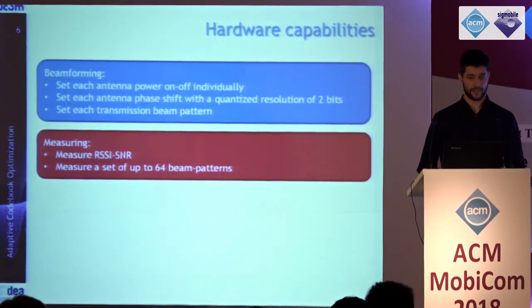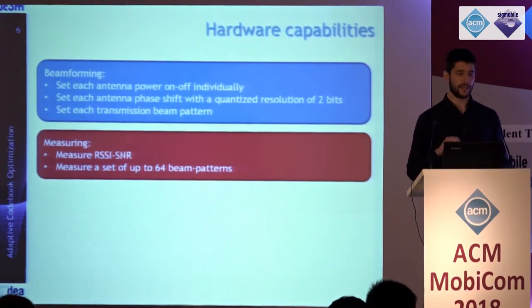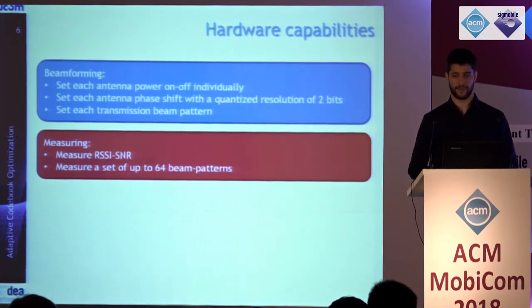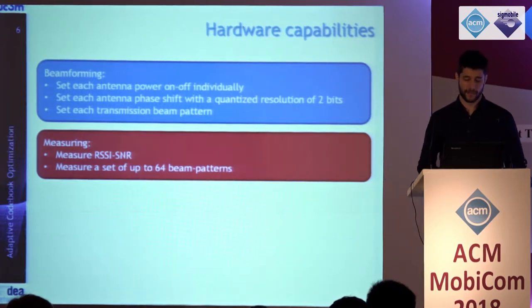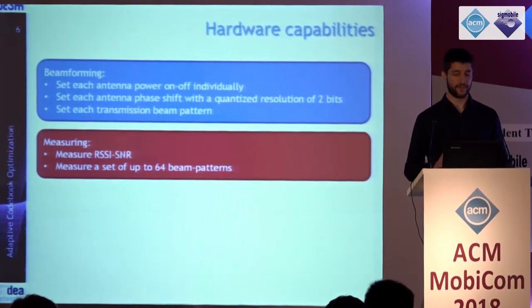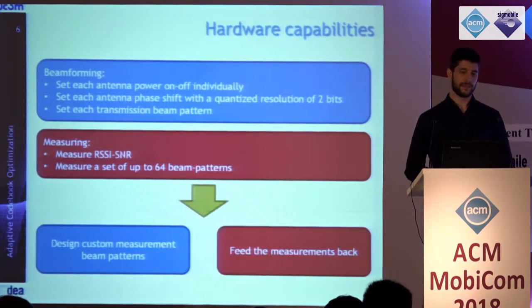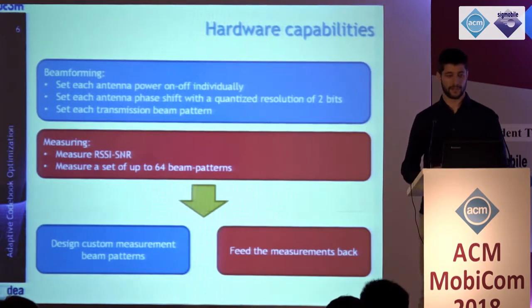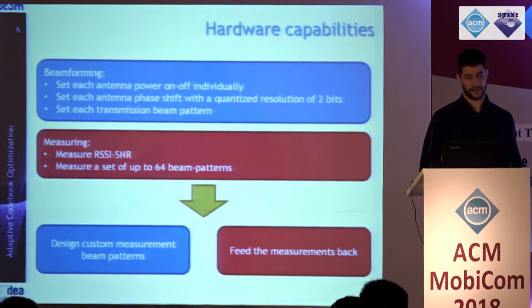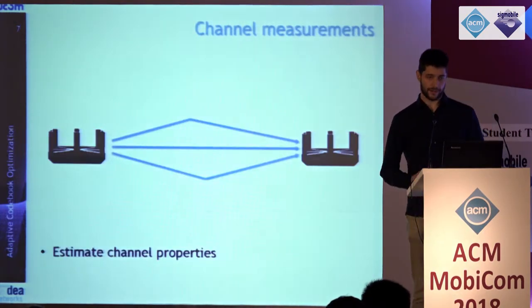This is why the standard currently uses a brute-force algorithm that simply checks different beam patterns, compares them, and selects the strongest one. To make channel estimation feasible, we first check what is available on the Talon router. The hardware has basic beamforming capabilities: for each antenna, we can switch it on/off and choose among four different phase shift values. We can define a codebook of up to 64 beam patterns for beam training, and the standard requires the receiver to measure SNR and RSSI. So we will design custom measurement beam patterns such that the fed-back RSSI and SNR measurements allow us to reconstruct a channel estimate.